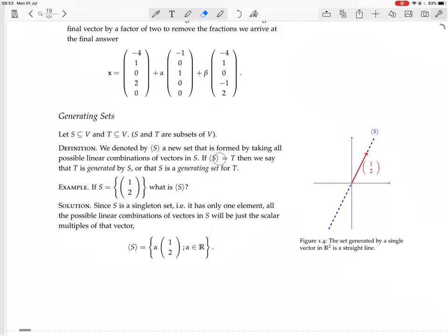If that thing equals T, then we say that T is generated by S or that S is a generating set for T. From now on, whenever you see this thing, you read the set generated by S. Sometimes you say that T is spanned by S.